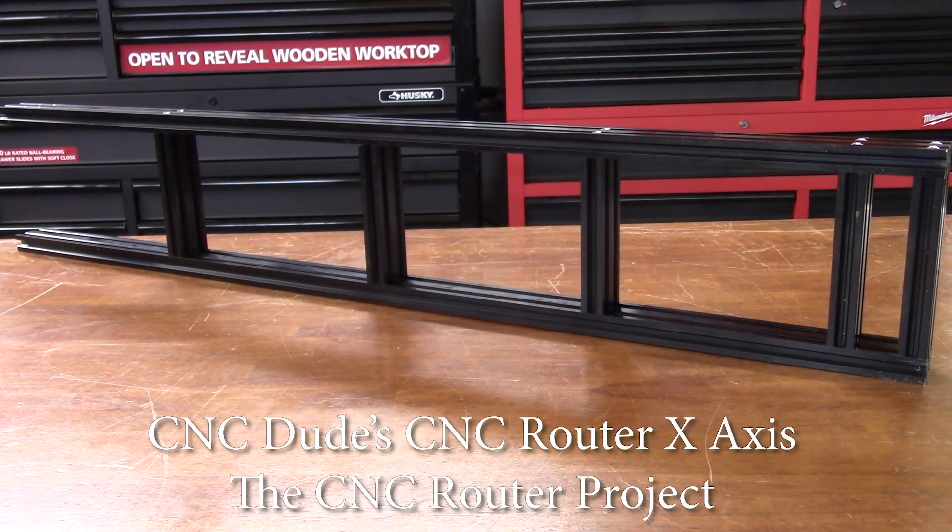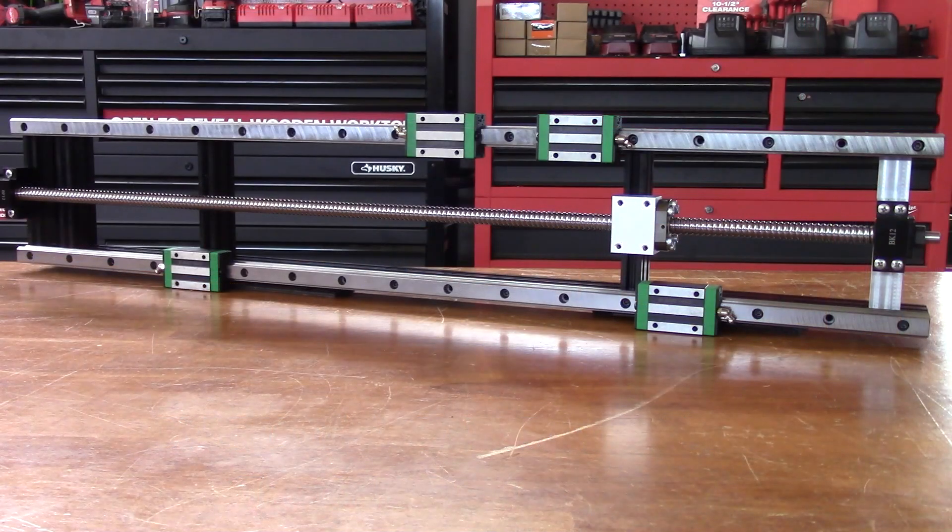Now that we have a frame for our X axis, we can transform it into an actual linear actuator by adding linear guide rails and a bolt screw.